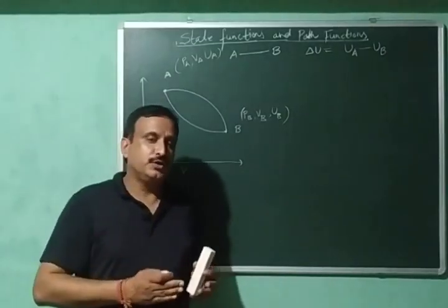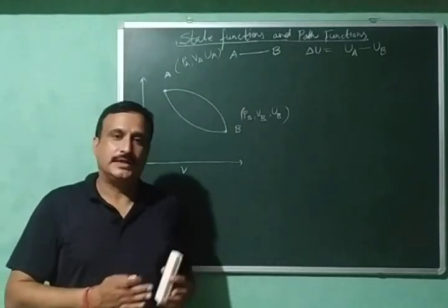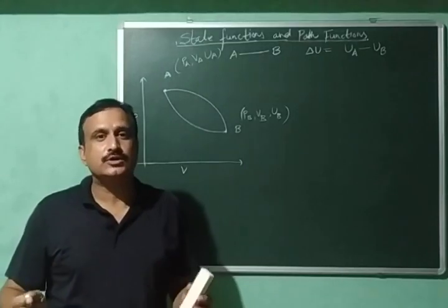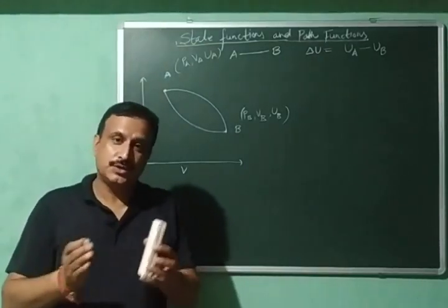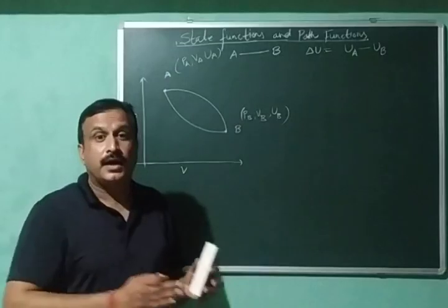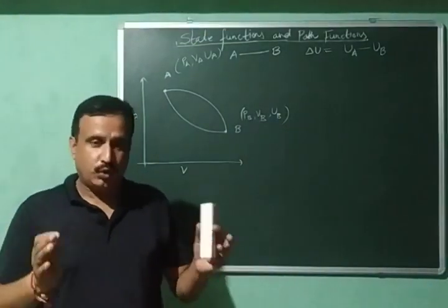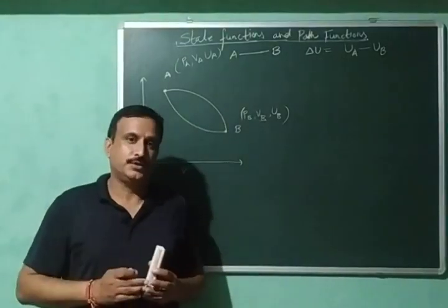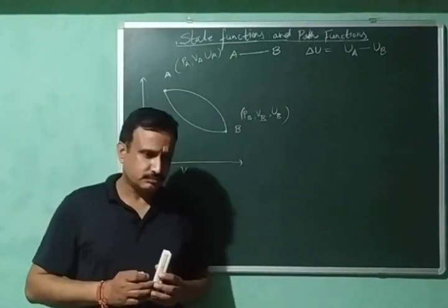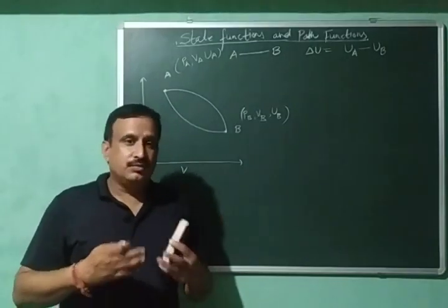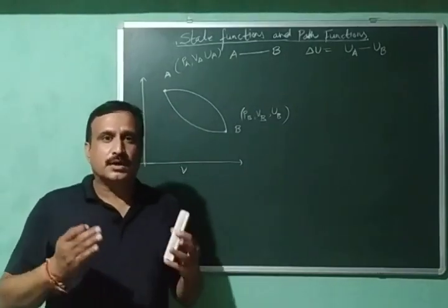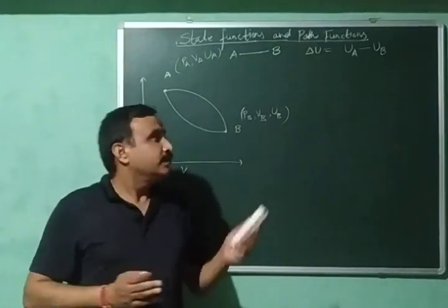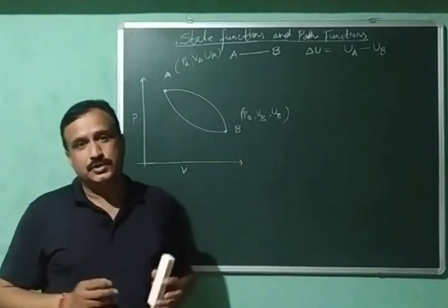In one of my previous videos, I gave you an idea about state functions and path functions. State functions are those properties of the system whose values depend upon the initial and final state of the system and do not depend upon the path followed. Whereas path functions are those functions whose values depend upon the path followed. We are now quite conversant with various thermodynamic terms and know the basics of thermodynamics.